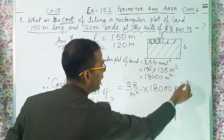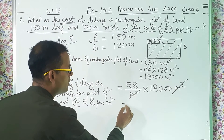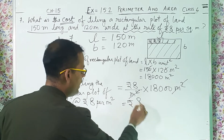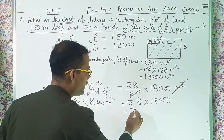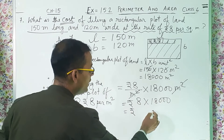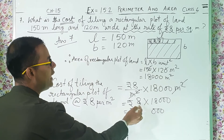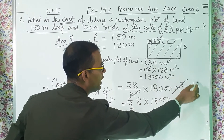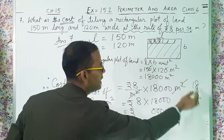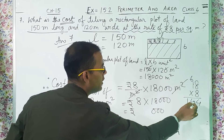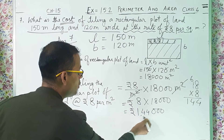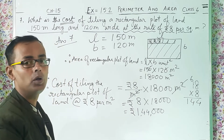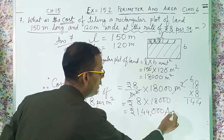Meter square and meter square cancel. So you get rupees 8 into 18,000. Applying the same trick: three zeros are there, put the three zeros. Now 8 into 18: 8 eights are 64, carry 6; 8 ones are 8 plus 6 is 14. So you get 1, double 4, triple 0 — that means 144,000. So the cost of tiling is rupees 144,000. This is the answer.